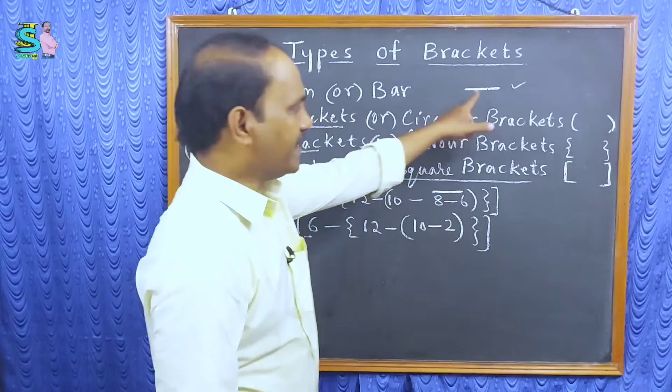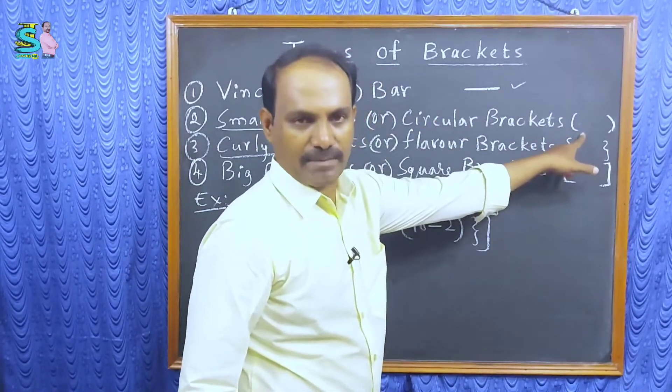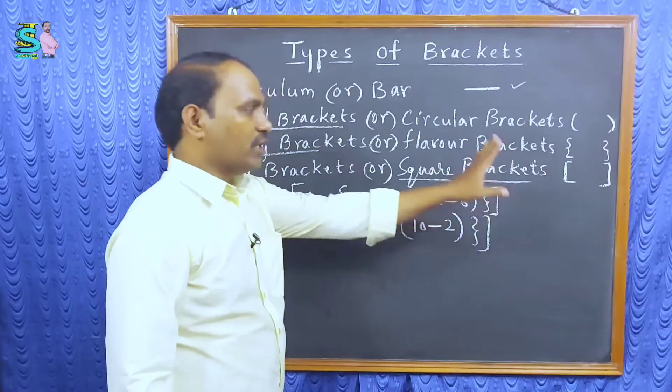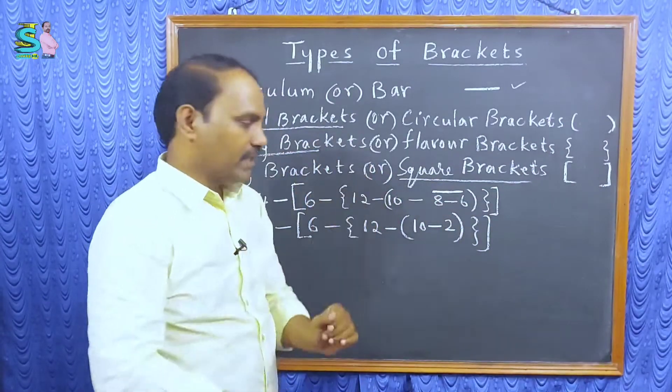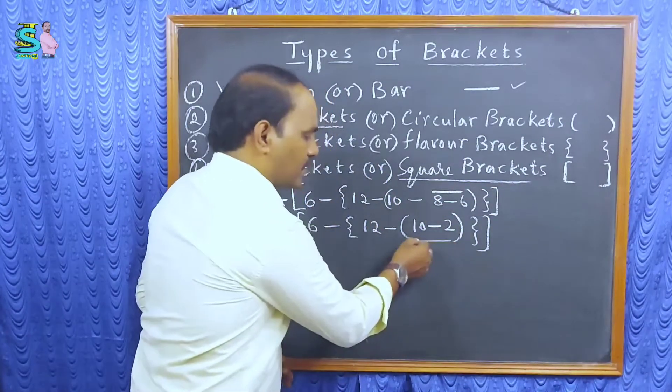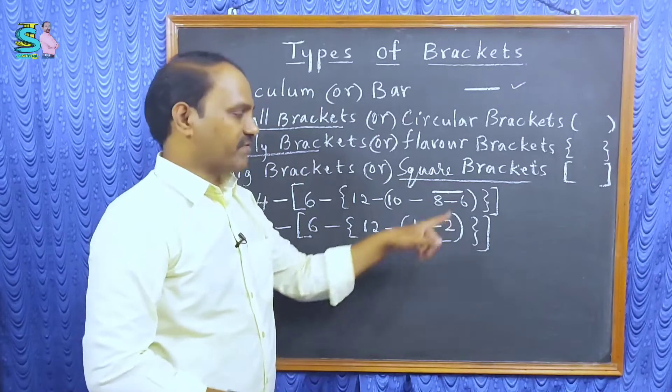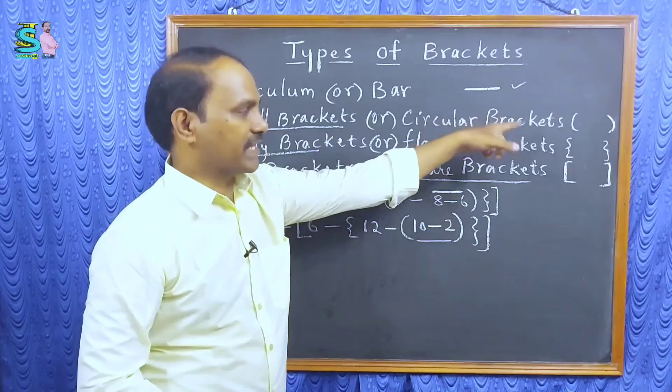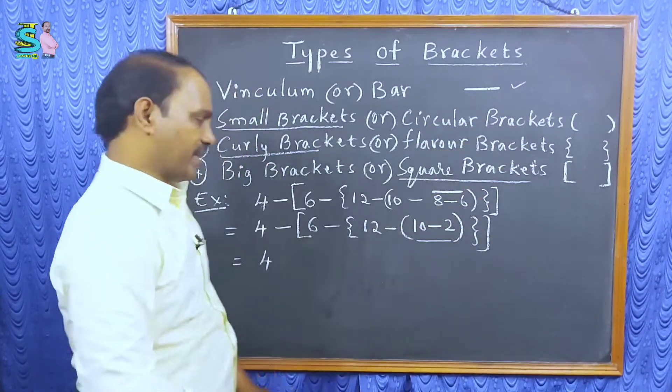What is next bracket? Circular bracket or small bracket. So, we are going to calculate this one. Vinculum is over. After that, small brackets.